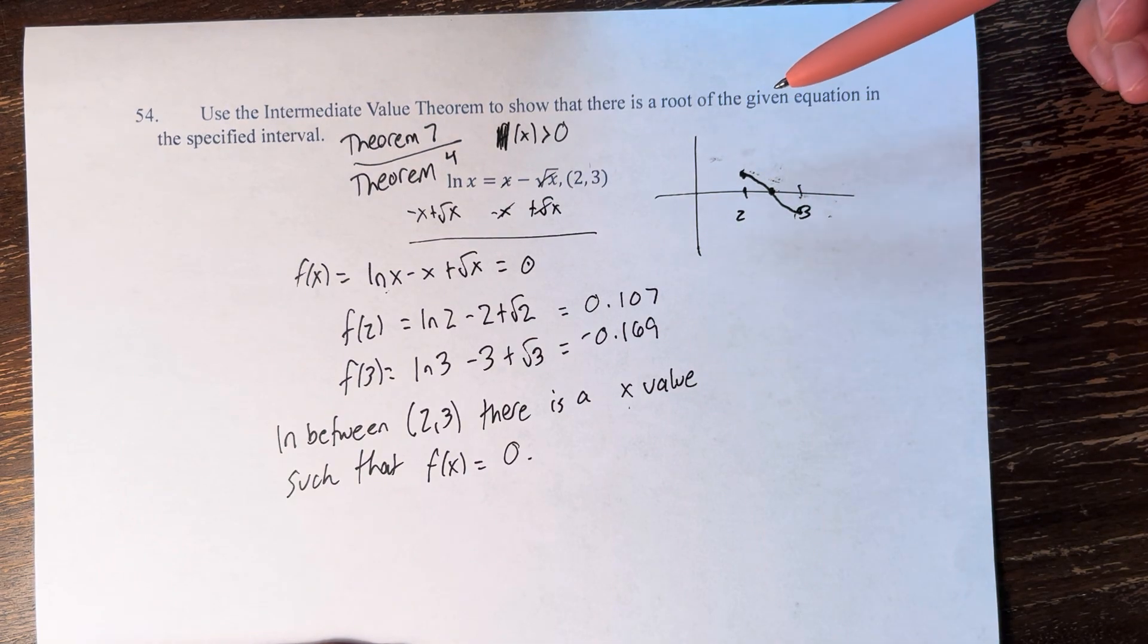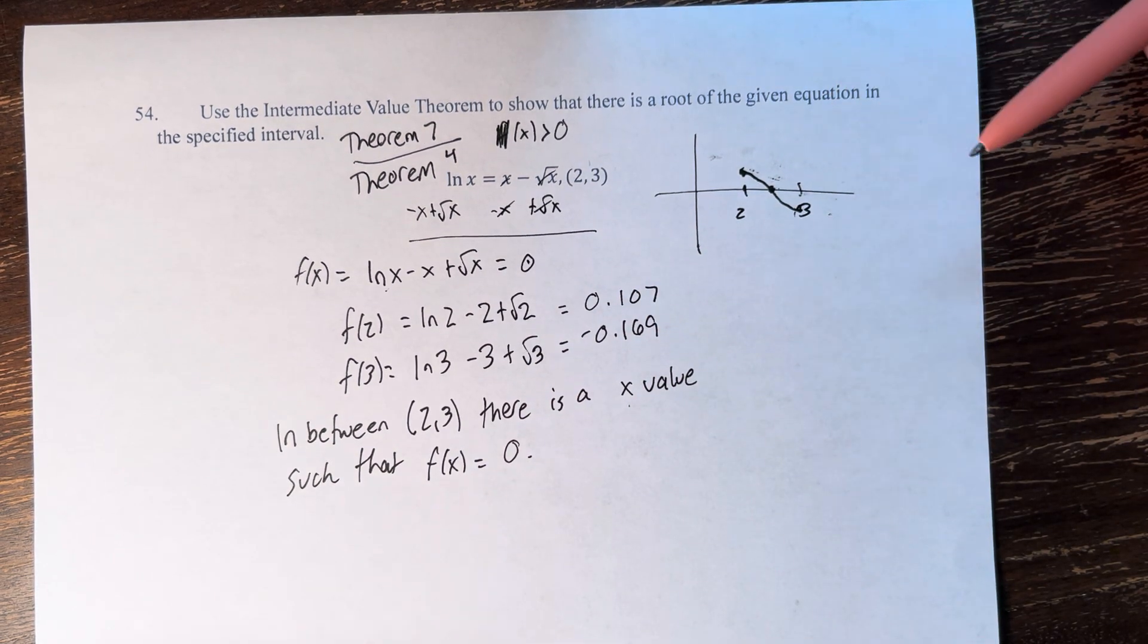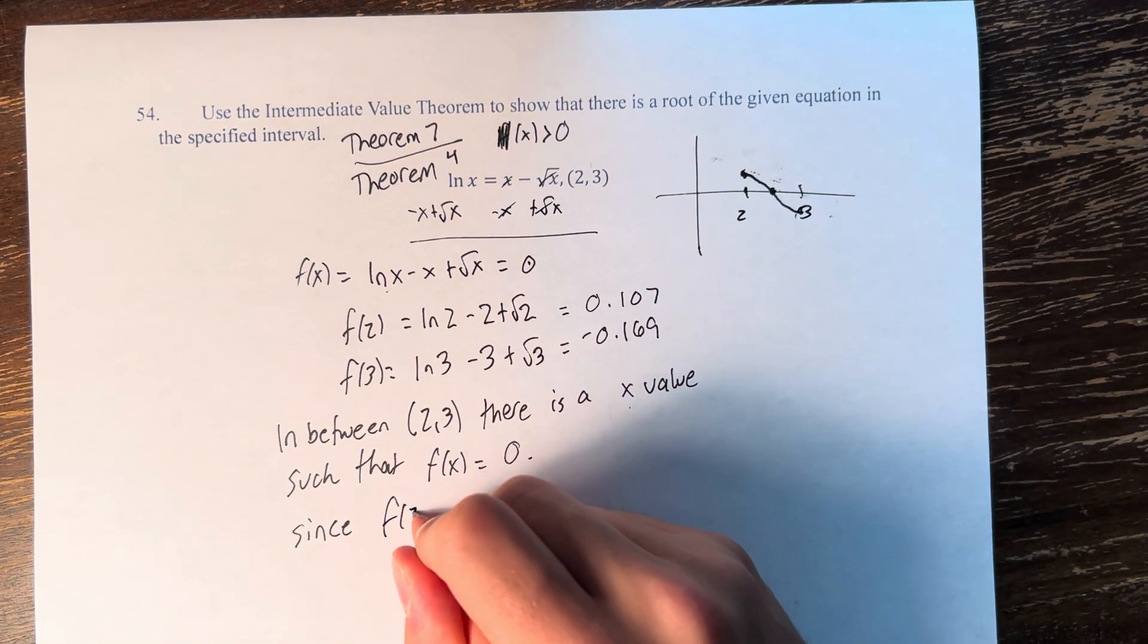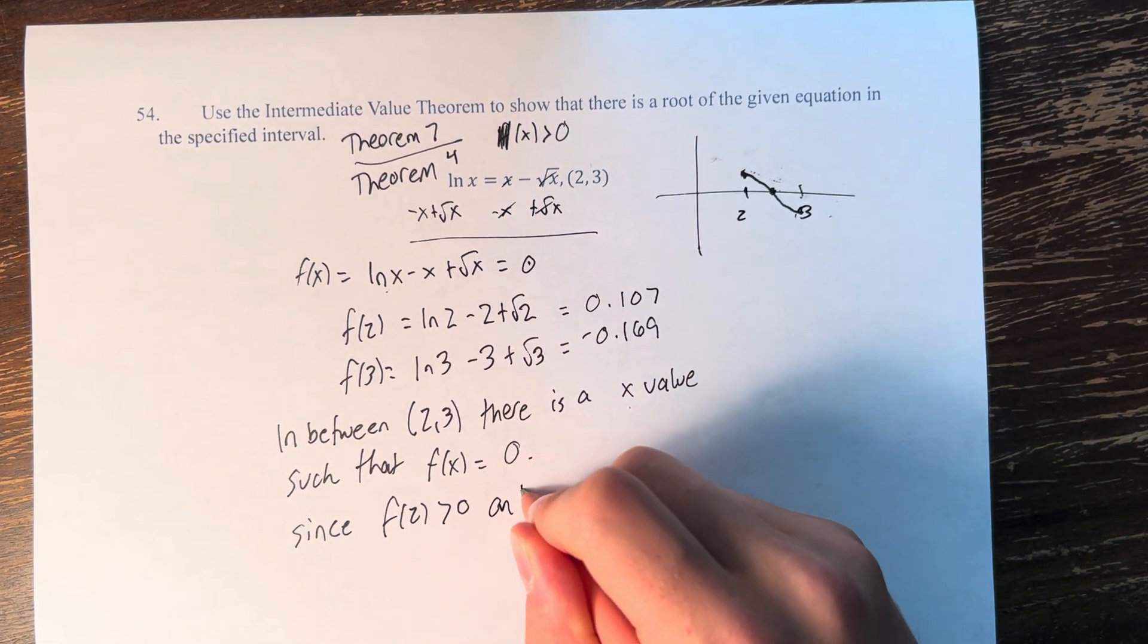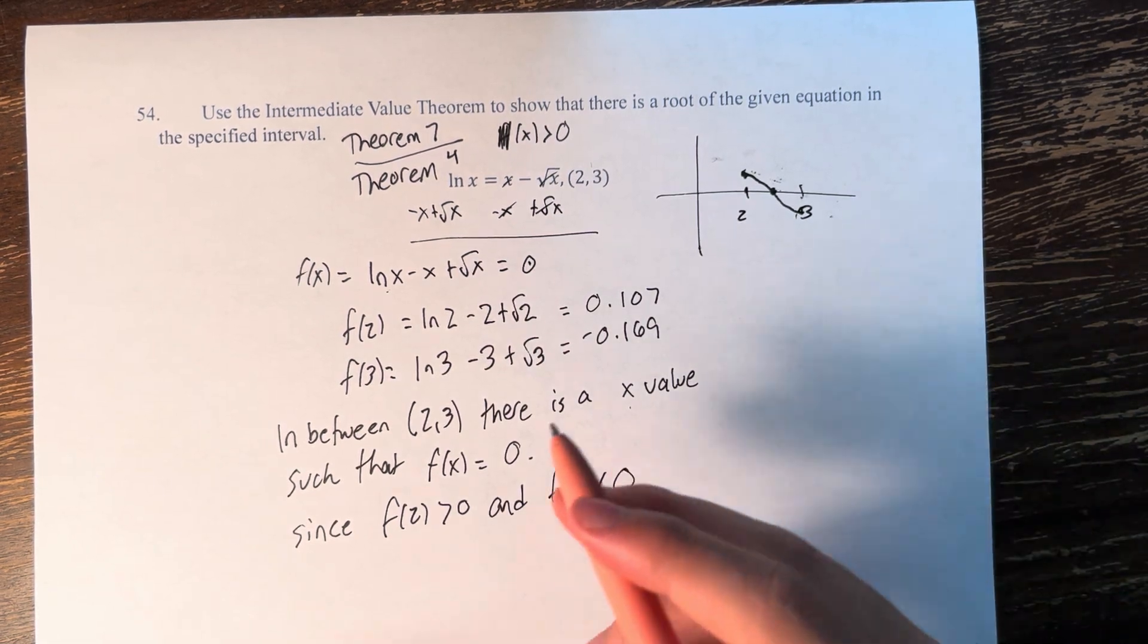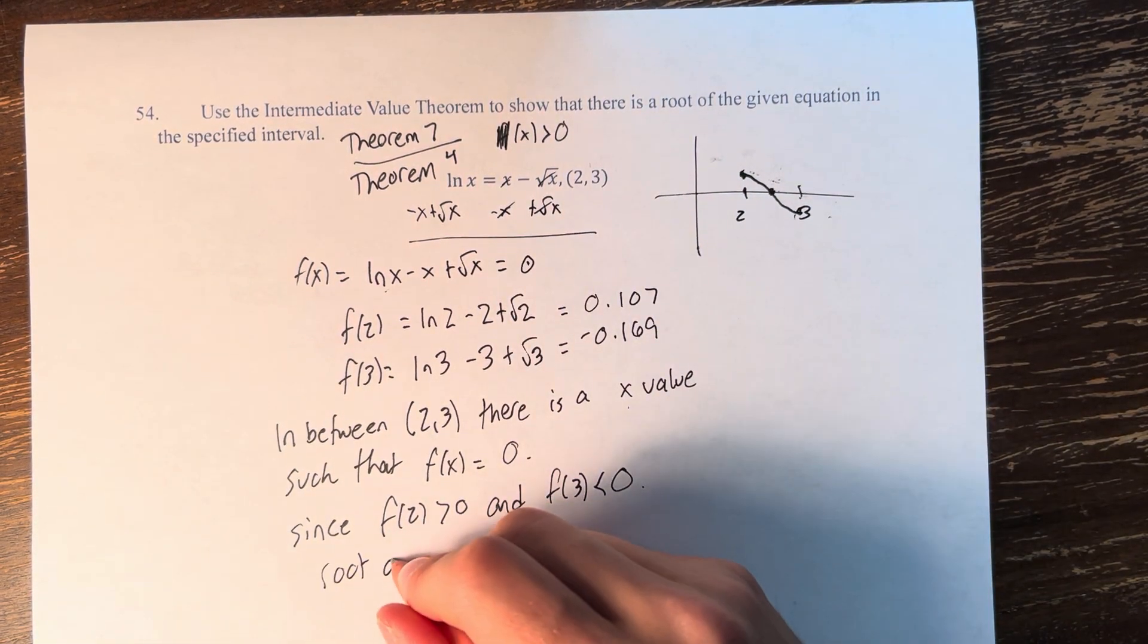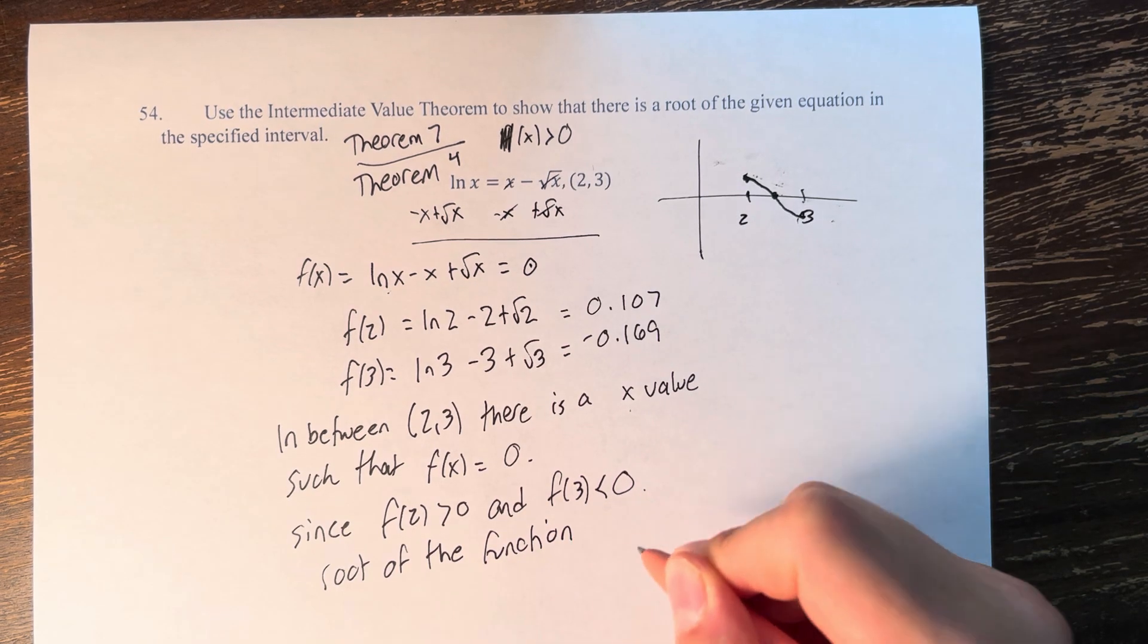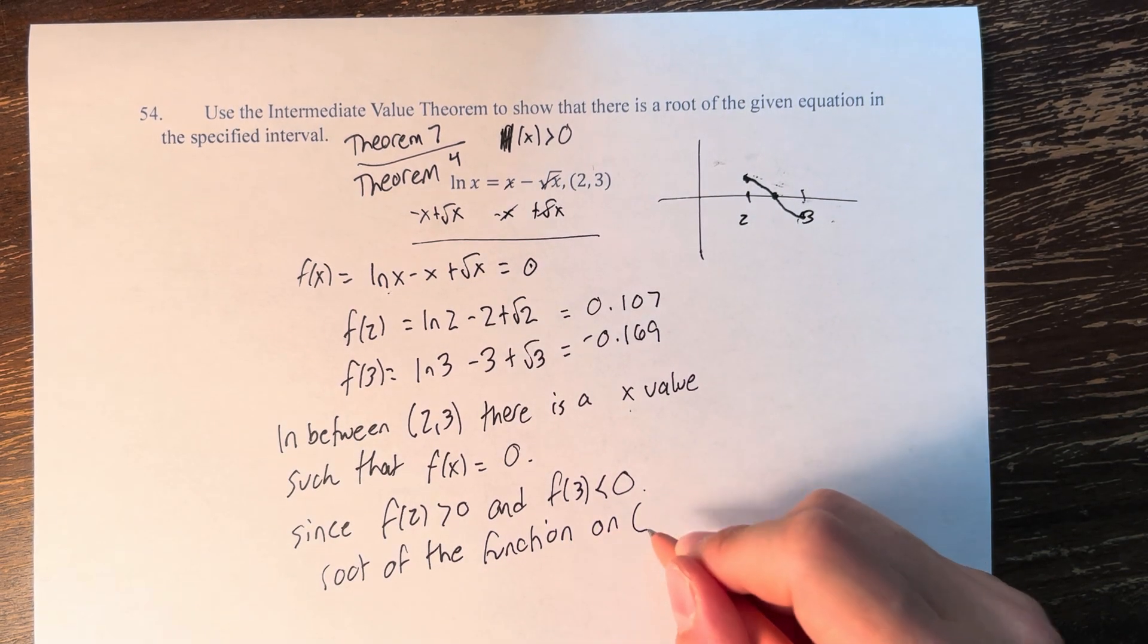By the Intermediate Value Theorem, since f(2) > 0 and f(3) < 0, there is a root of the function f(x) on the interval from 2 to 3.